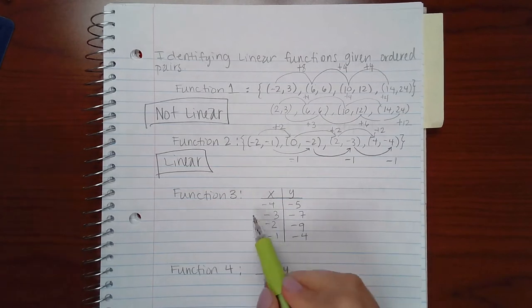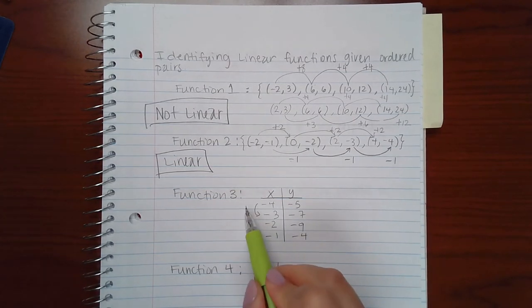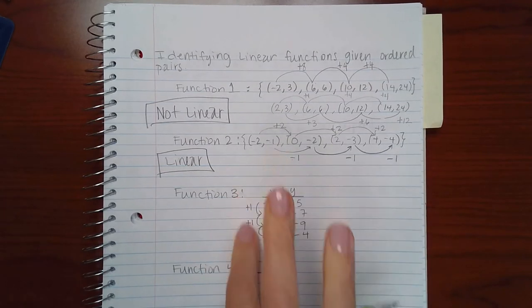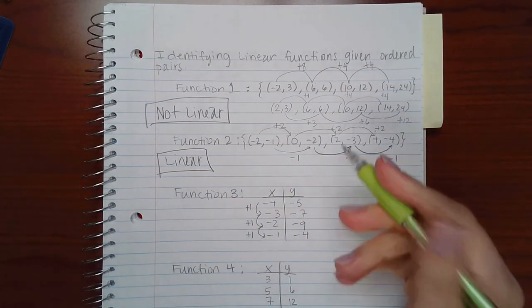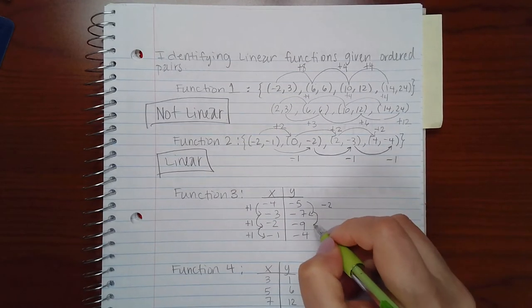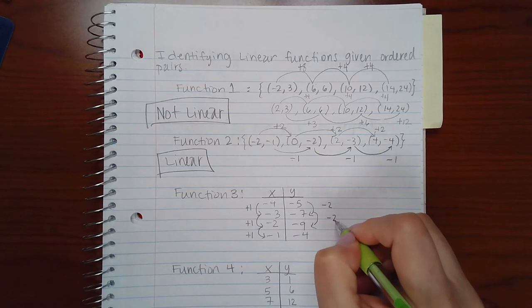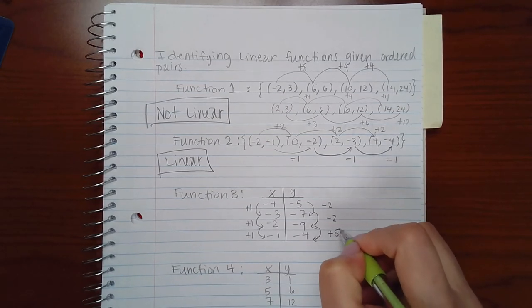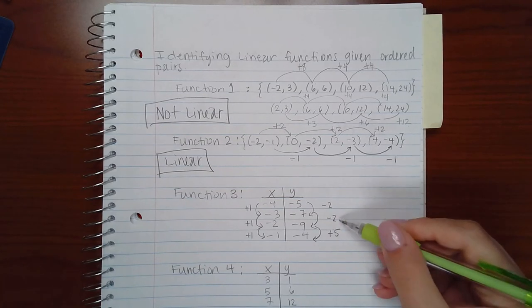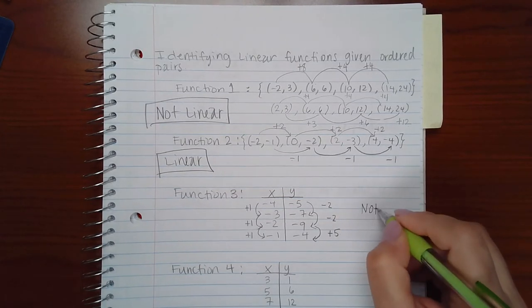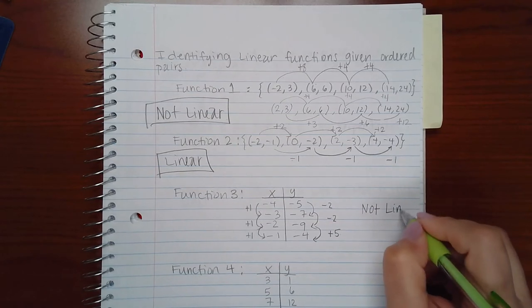Now for the next function: the x-values go from here to here adding 1, adding 1, adding 1 — so x-values are good. But for the y-values, from the first to the second I'd subtract 2, the second to the third subtract 2, but from the third to the fourth I'd have to add 5. Those two were consistent but the last one throws everything off, so this function is not linear.